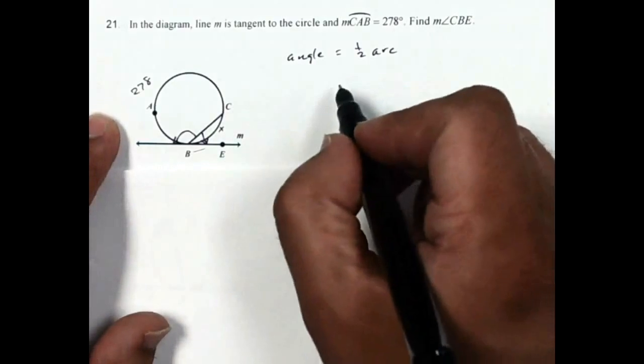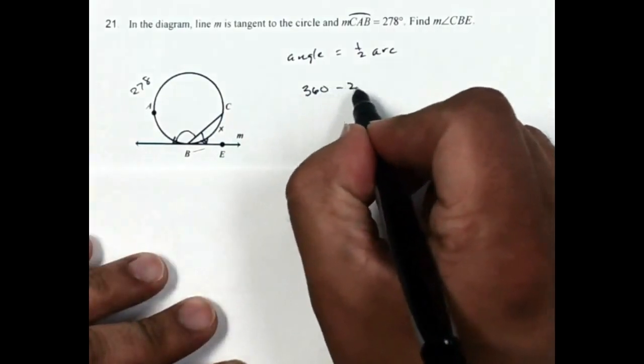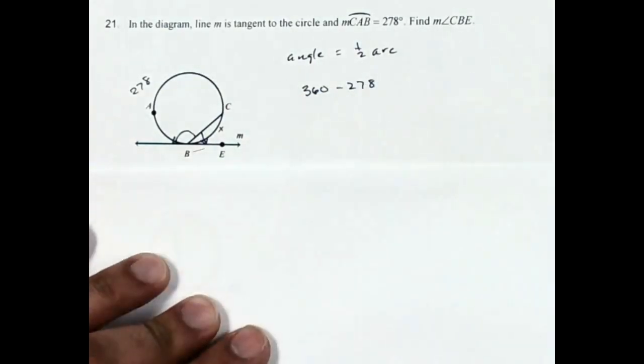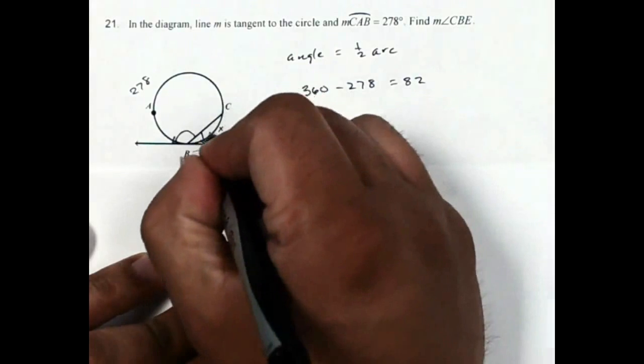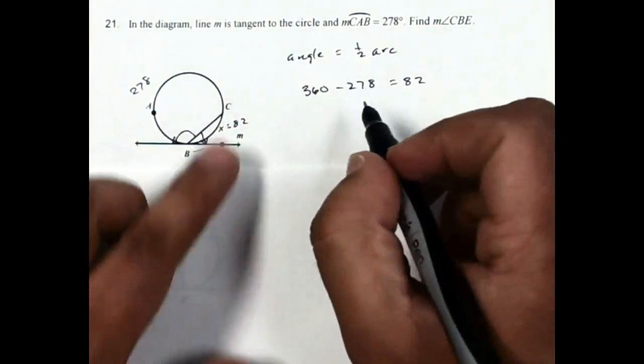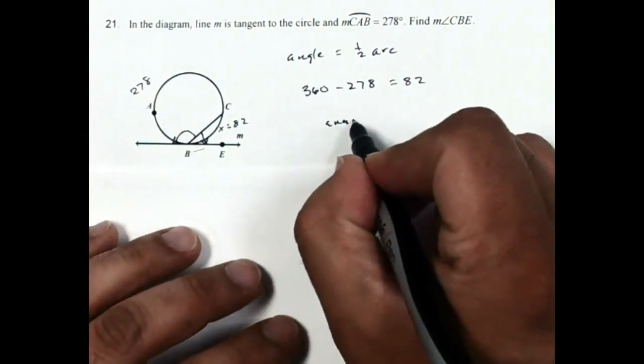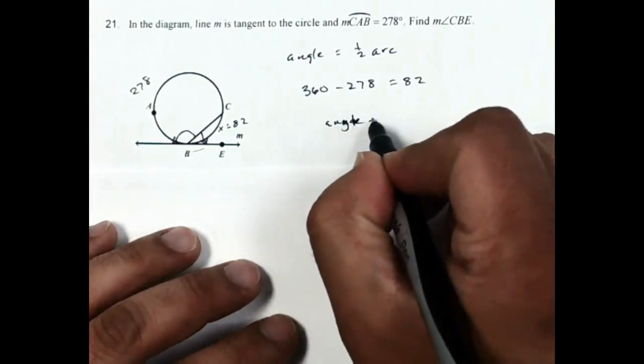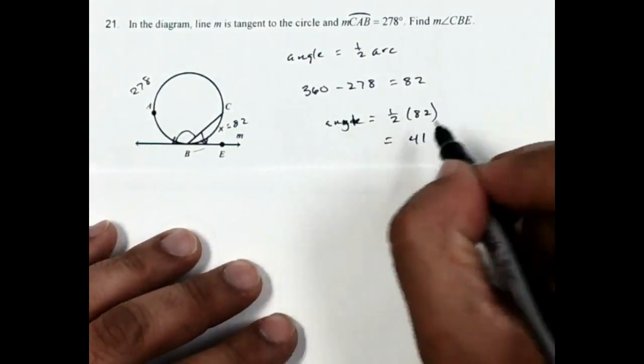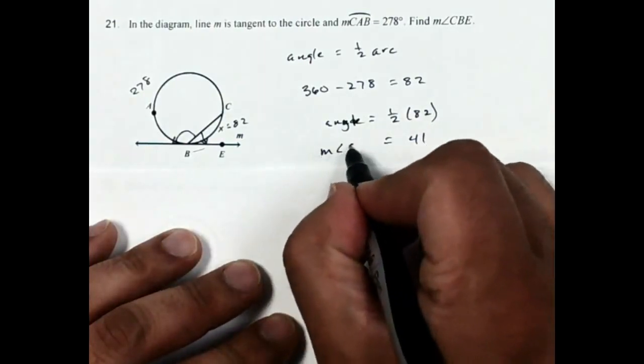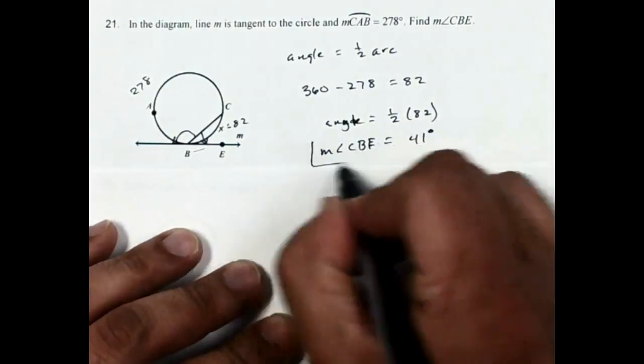So what I need to do is I need to take 360 minus 278, which comes out to be 82. So the arc is 82, the angle is half, half of 82, which is going to be 41. So the measure of angle CBE is 41 degrees.